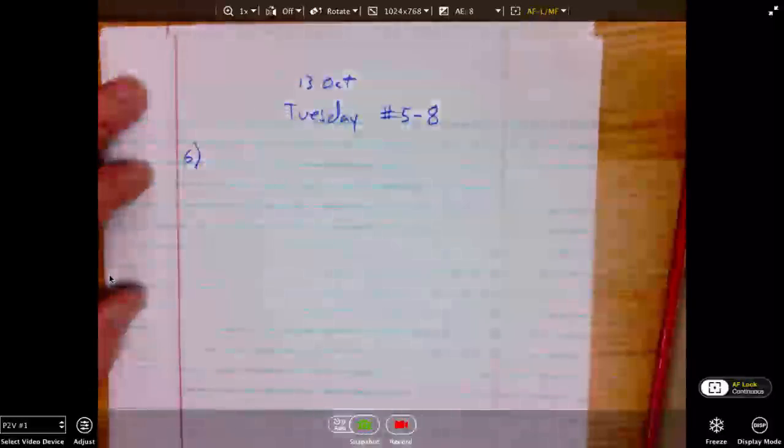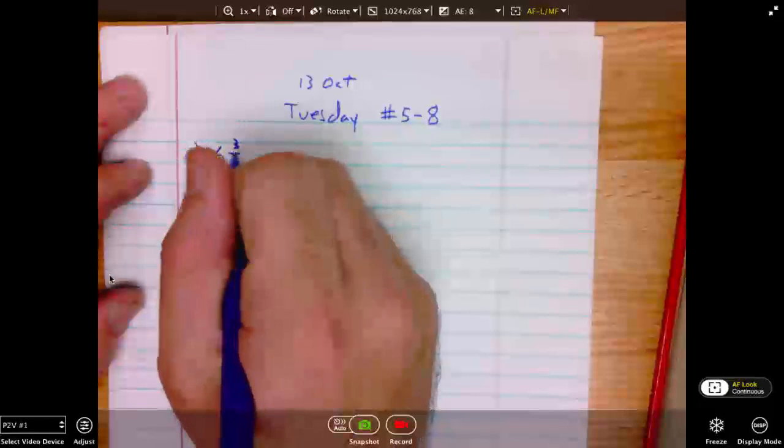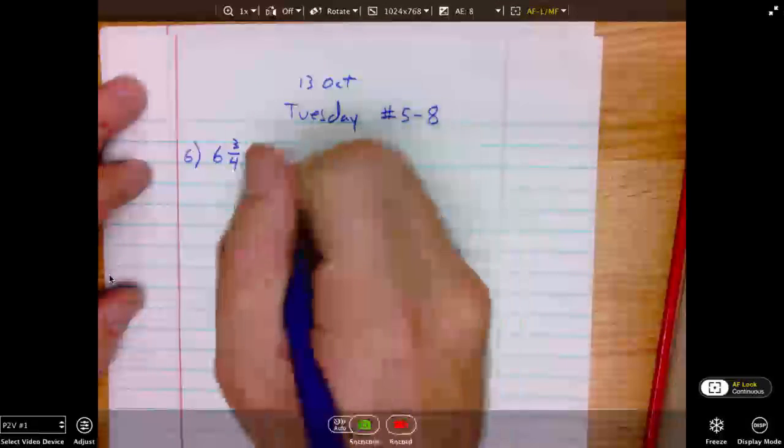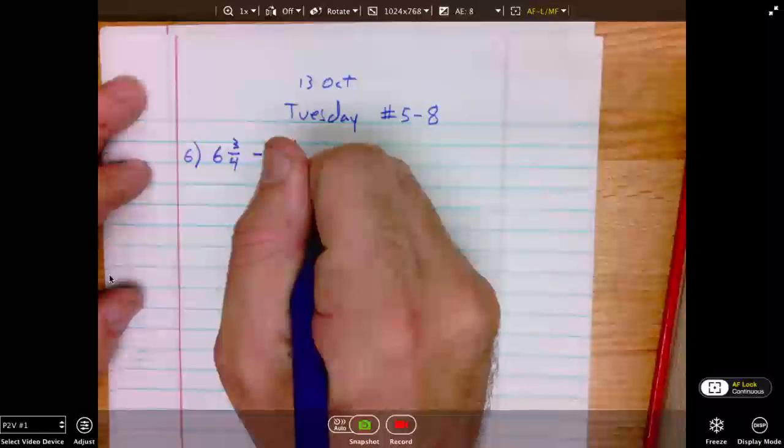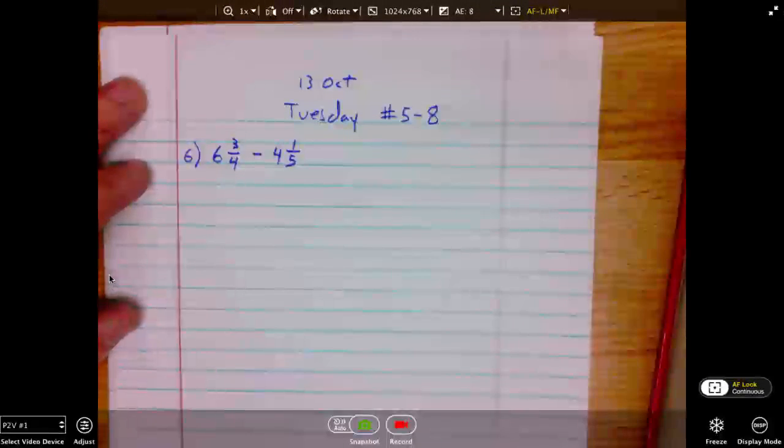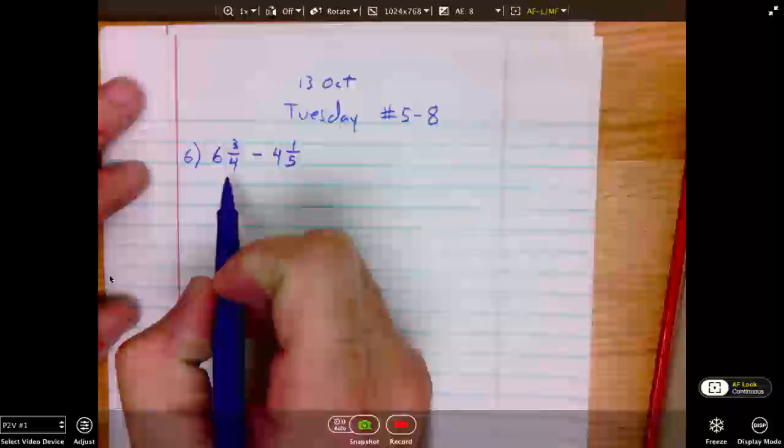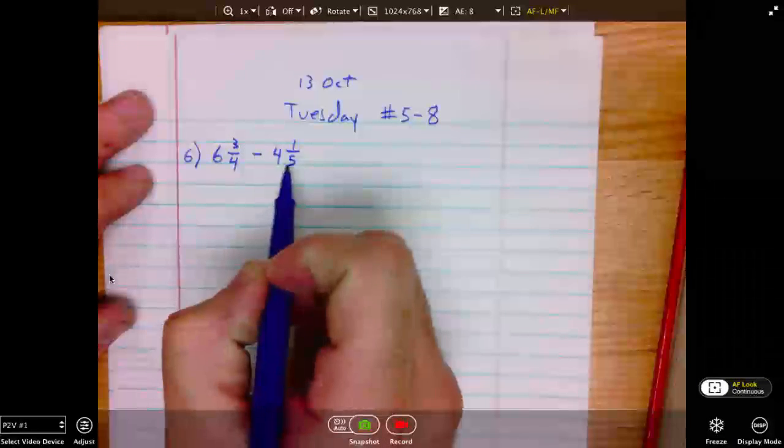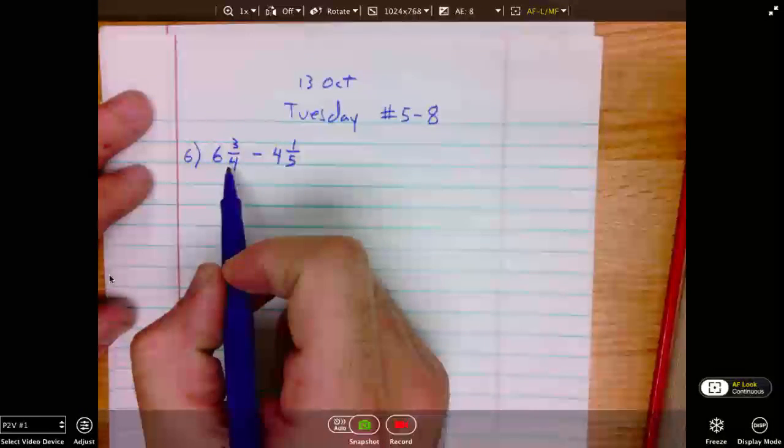Number 6 says 6 and 3 fourths minus 4 and 1 fifth. The first thing we will do is convert each one of these fractions, mixed numbers, into improper fractions.